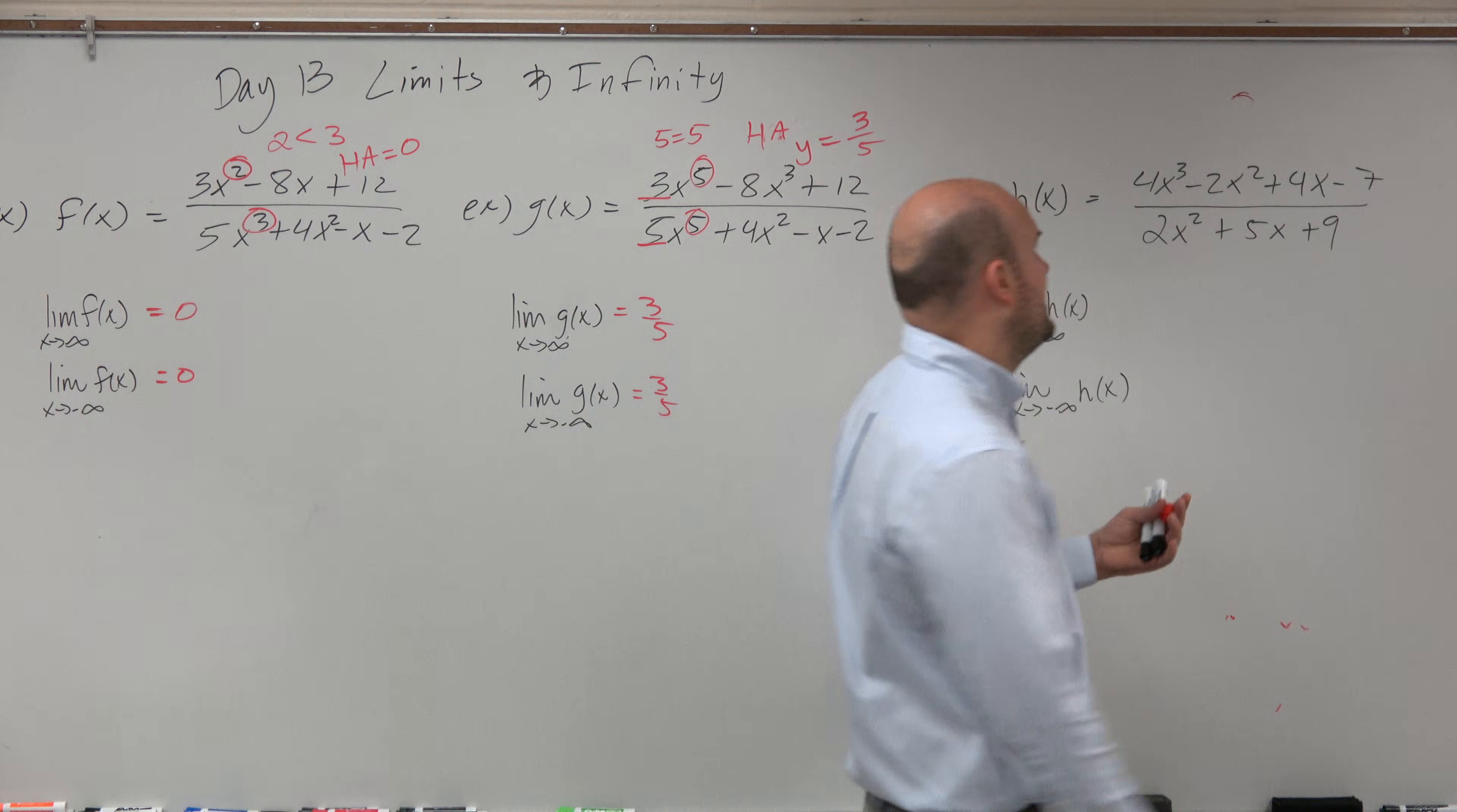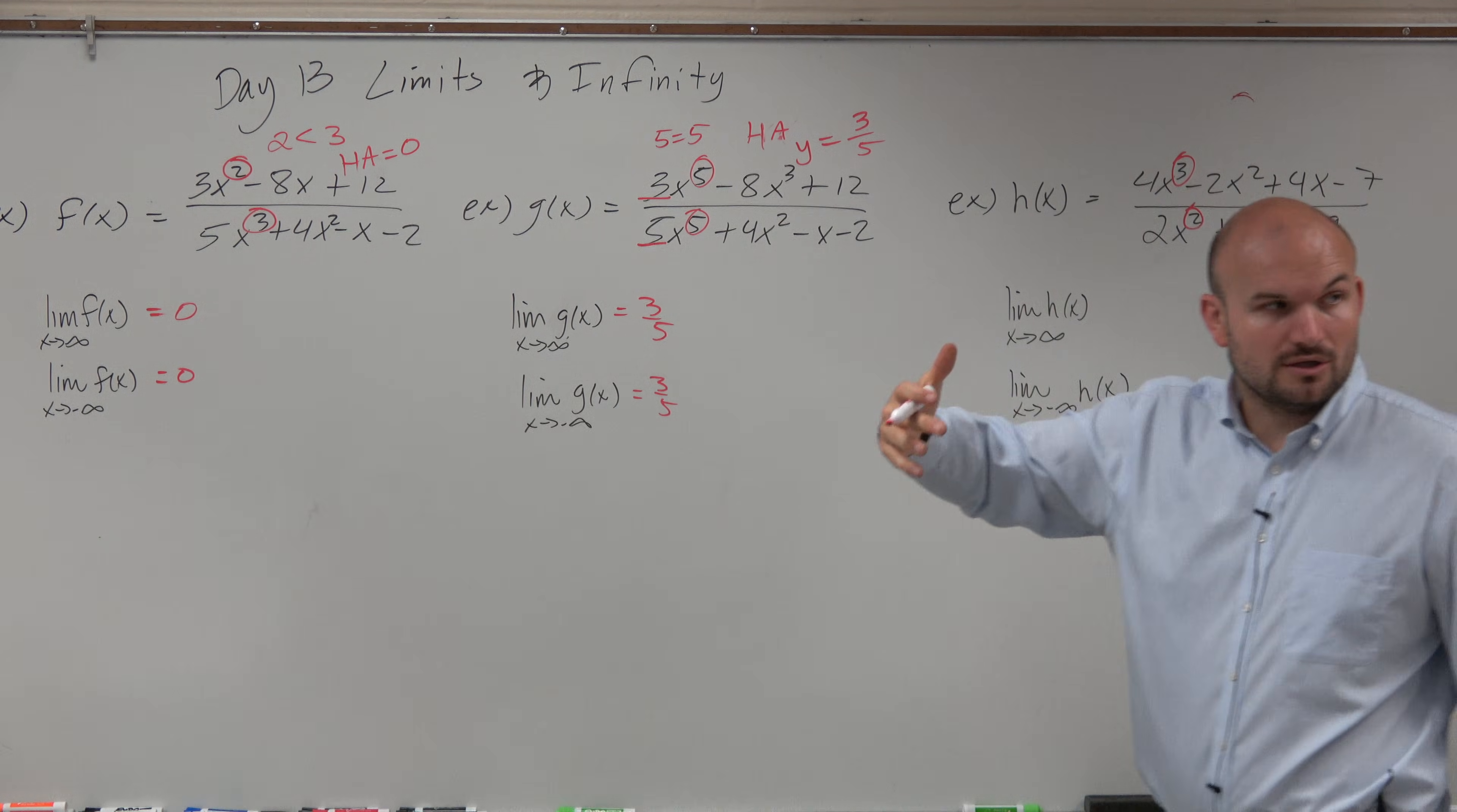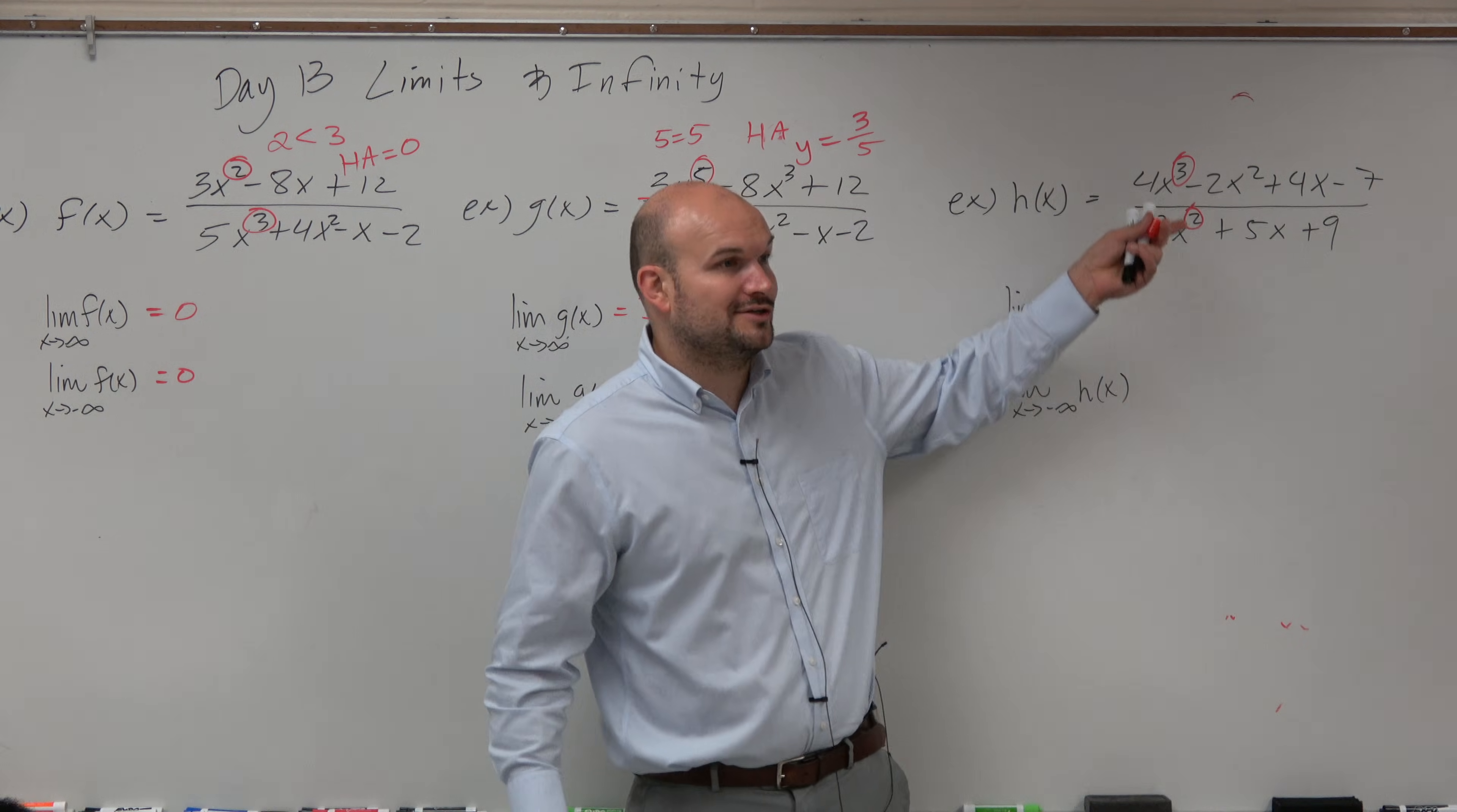Now, in this last one, we have a little bit of an issue. Because the graph has now what we have is a horizontal, or I'm sorry, a slant, or an oblique asymptote. So, our first thing I showed you was like this long way of making sense of it. We could do long division.